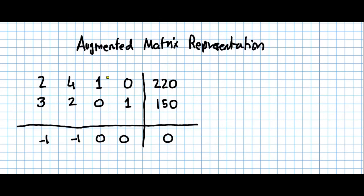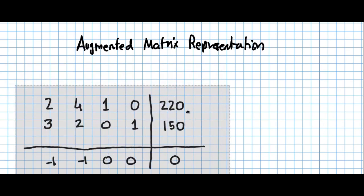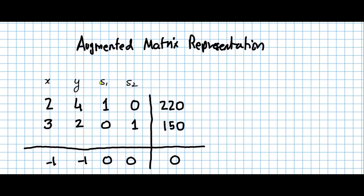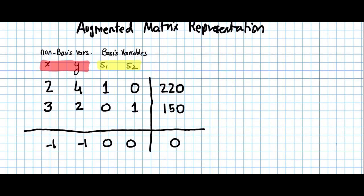By looking closely at the augmented matrix, you can identify the presence of an identity matrix. This identity matrix represents the so-called basic variables — here we have x, y, s1, and s2. We can identify that s1 and s2 are currently the basis variables, whereas x and y represent the non-basis. What we really want to do is switch the roles of the basis variables with the non-basis variables, so that the identity matrix shifts toward x and y.